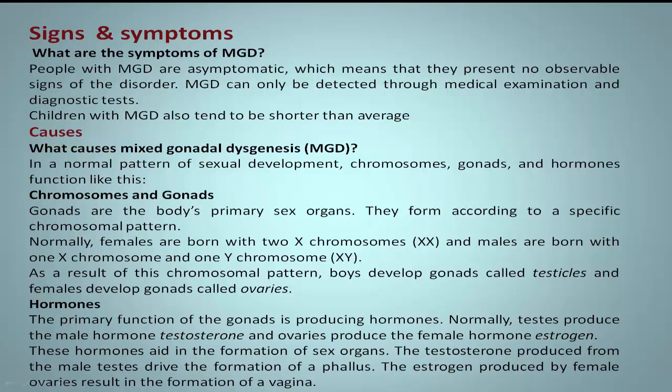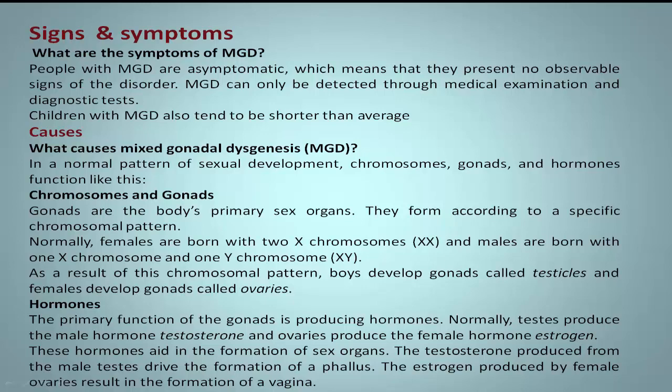The testosterone produced from the male testes drives the formation of a phallus. The estrogen produced by female ovaries results in the formation of female sexual development. Children with MGD are born with an abnormal chromosomal pattern called a mosaic: 46XY/45XO.